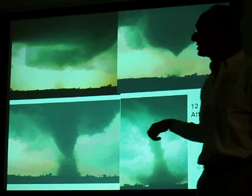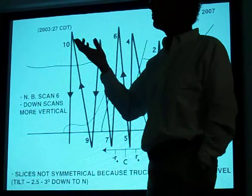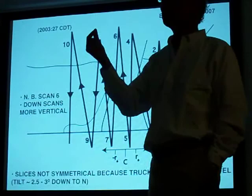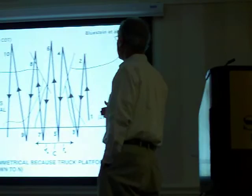This is that tornado. Also, we photogrammetrically measured the width of the debris cloud, and it happened to match the width of the polarimetric debris signature. So this stuff is good. So when the weather service uses polarimetric radar, they're going to have another tool to know there's a tornado out there. Not only will you look for the hook and the vortex, but you're going to look for the debris.